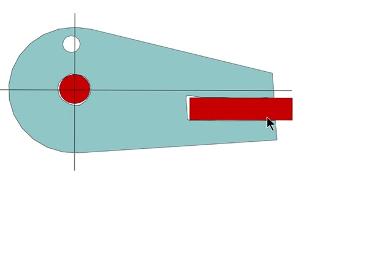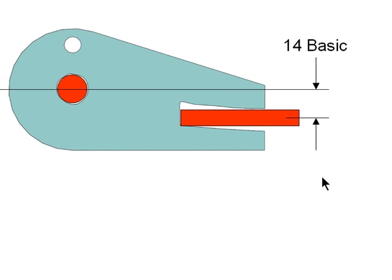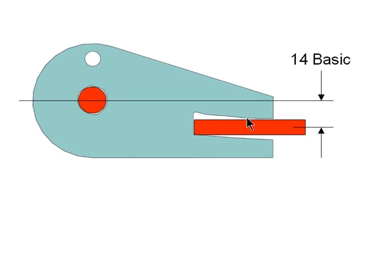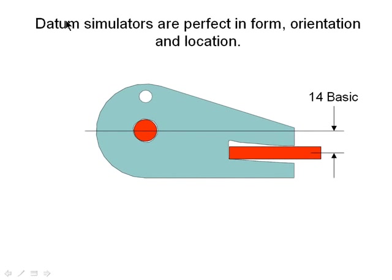This second method is preferred by a lot of coordinate measurement machine operators. However, the correct answer is to locate parallel planes at the basic location and expand them to fill the slot — because datum simulators are perfect in form, orientation, and location.